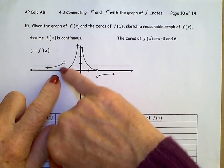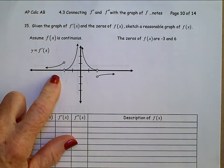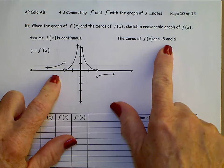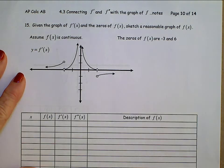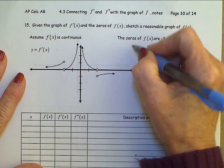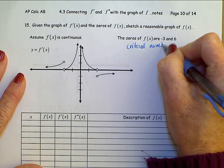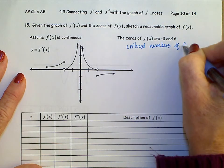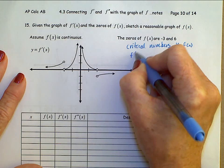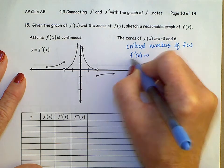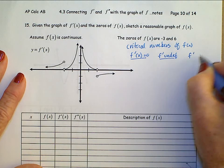We've got some jump discontinuities going on. The zeros of f of x are negative 3 and 6 — we'll tuck that information away for now — and let's start off looking for the critical numbers of f of x. The critical numbers of f of x occur when f prime is equal to 0, f prime undefined, or f prime does not exist.